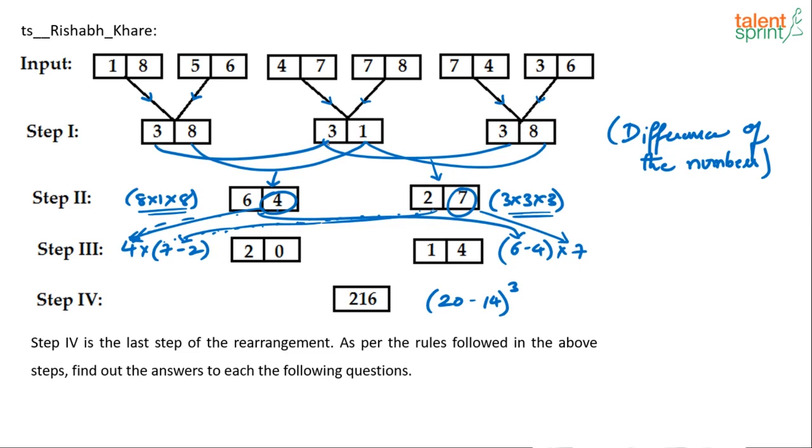First step is differences. Second step: multiply the first digits of all the three numbers, take that in the second place. Multiply the second digits of all the numbers, take that in the first place. In the third step, difference of the two digits multiplied with the second digit of first number gives you the first output. Difference of the two digits multiplied with the second digit of second number gives you the second output. Step 4.